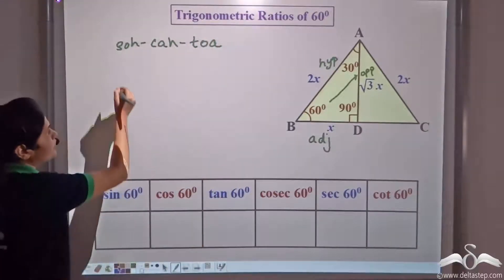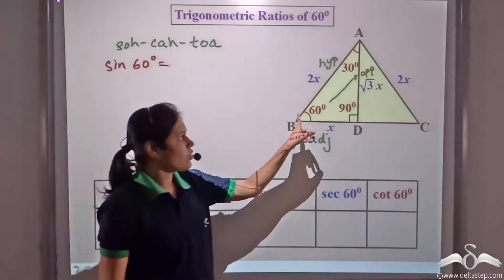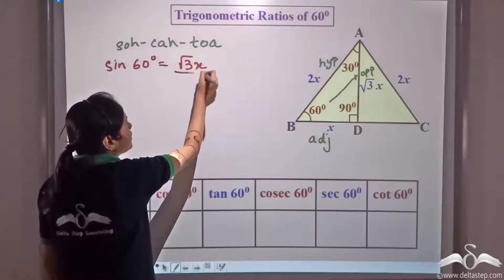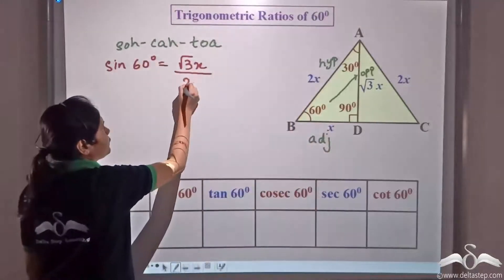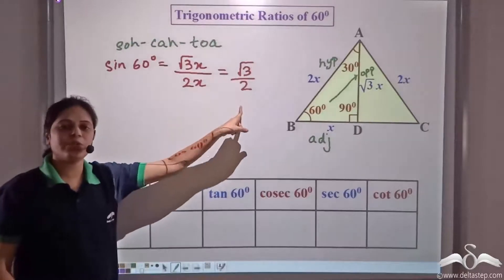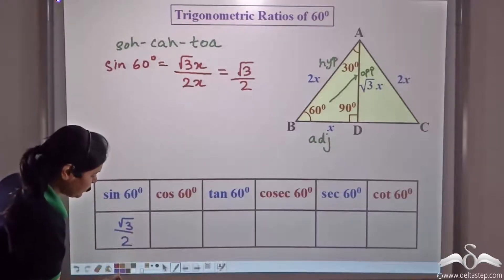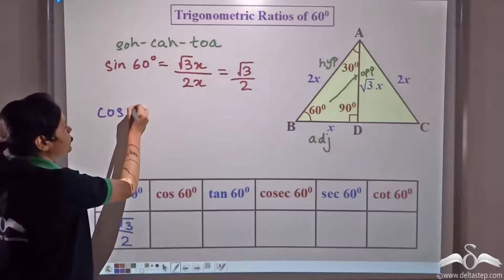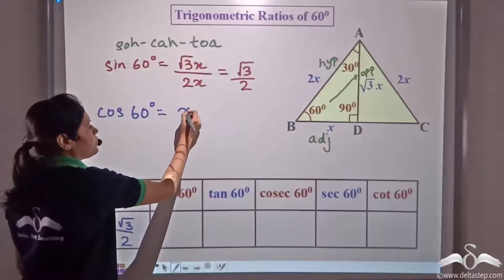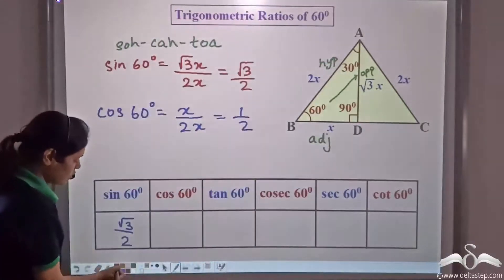Using SOHCAHTOA: sin 60 = opposite / hypotenuse = √3·x / 2x = √3/2. Cos 60 = adjacent / hypotenuse = x / 2x = 1/2. So sin 60 equals √3/2 and cos 60 equals 1/2.